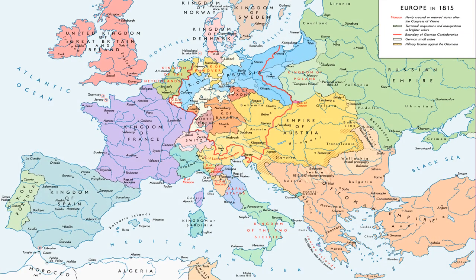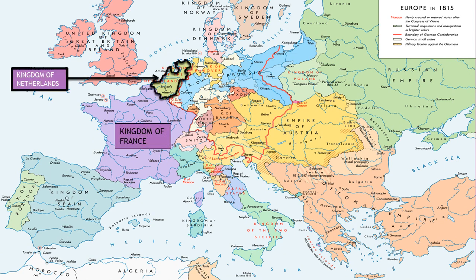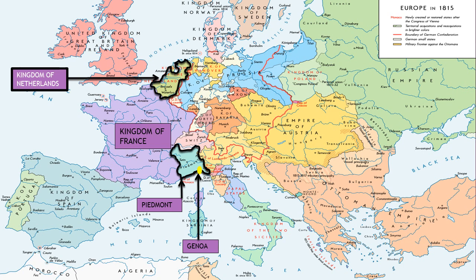Let us understand all this through a map. This is the Kingdom of France. Netherlands was set up on the borders of France to restrict French expansion, and Netherlands then included the Kingdom of Belgium, which is now a separate country. Piedmont was a region belonging to Italy that was captured by Napoleon, so it was given back to the Italian princely house. Genova was also captured by Napoleon and was added to Piedmont.